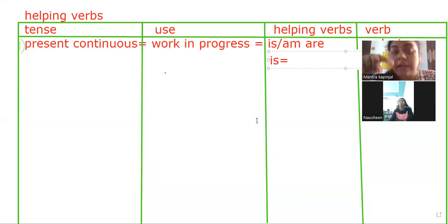In today's lesson, we are learning helping verbs. Our first tense is present continuous tense. When we use this tense, our work is in process. It means work is still going on.